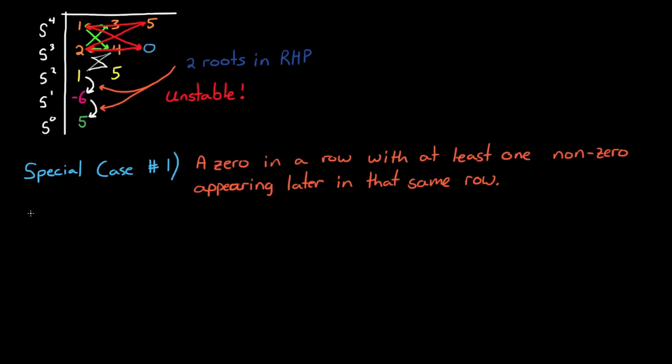Let me show you a few examples of what I mean by this. Say you were given a polynomial whose coefficients created the routh array like this. In this case there is a 0 in the second column of the first row, and a non-zero, or a 4, in the last column. So this meets the criteria for our special case.